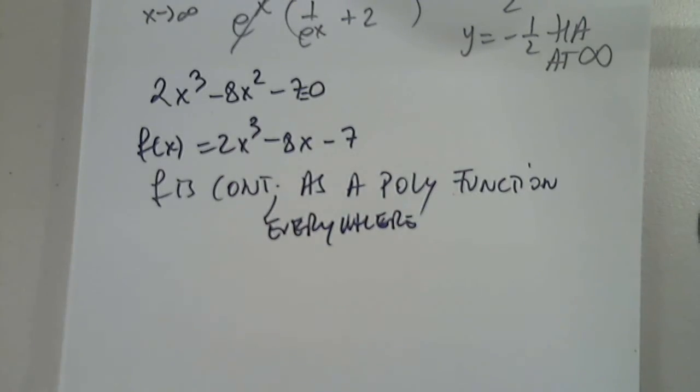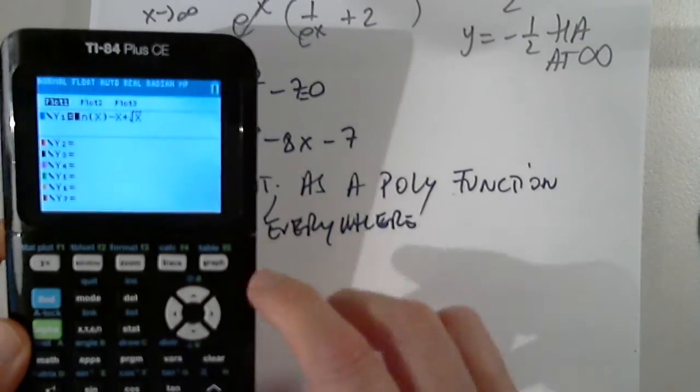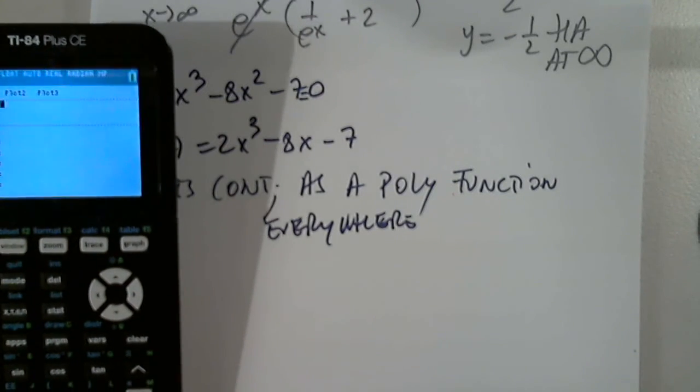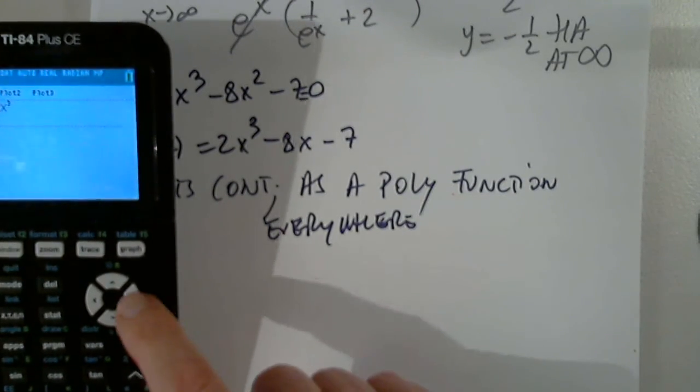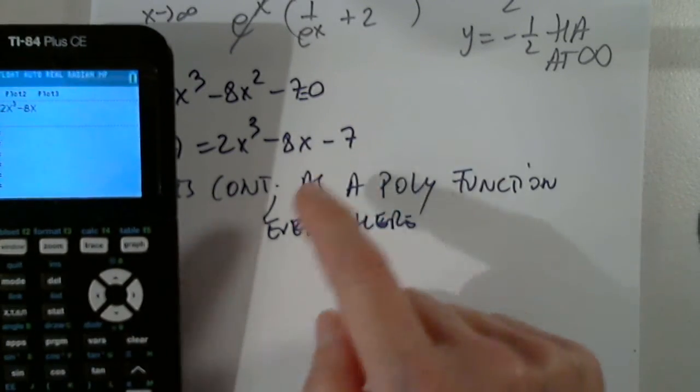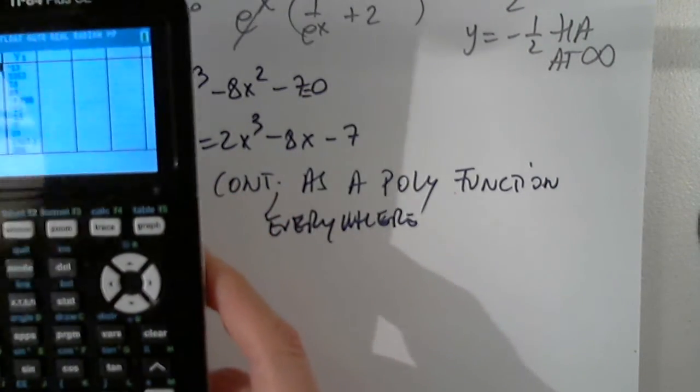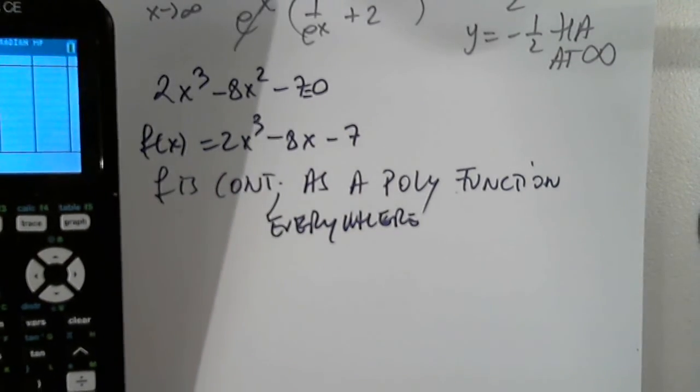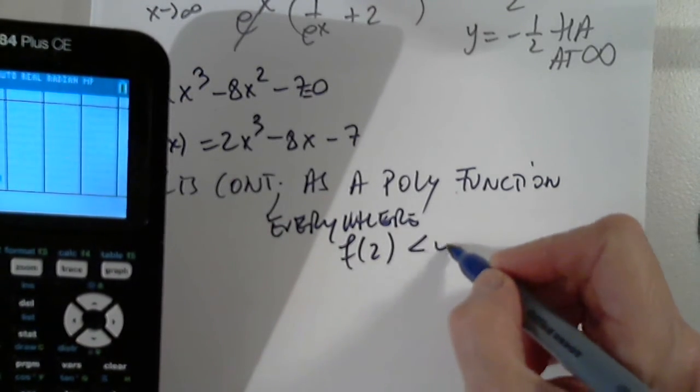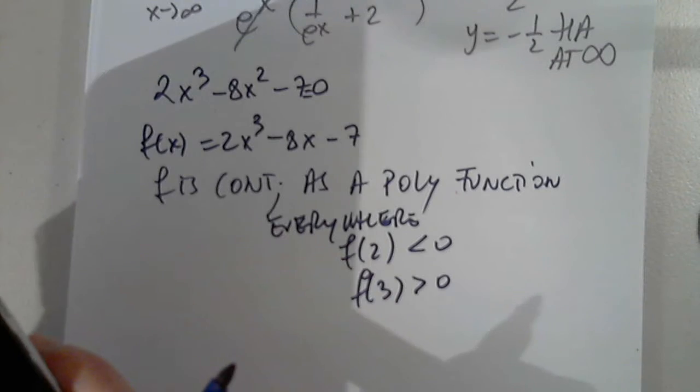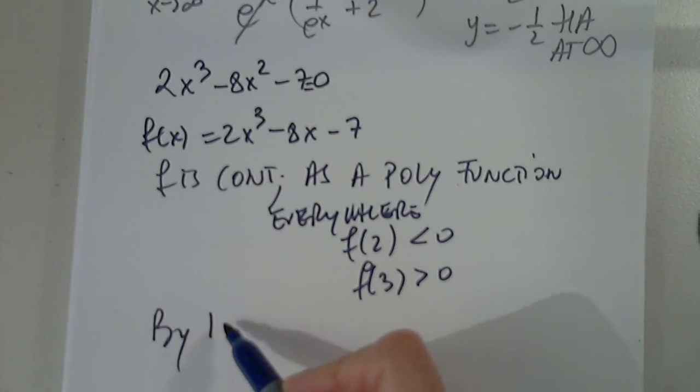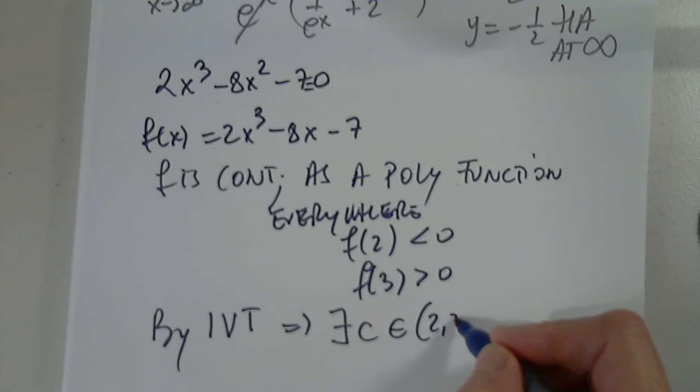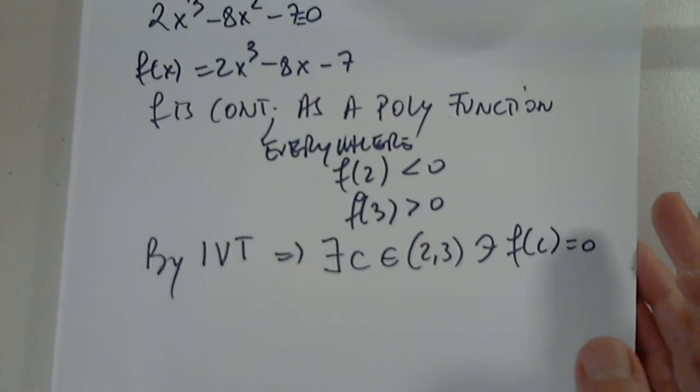I put the function in the graph and calculator and I punch in numbers. So in y equals, I clear and I put 2x cubed minus 8x minus 7. And I found an interval between F of 2 is negative, F of 3 is positive. And then I would write by intermediate value theorem, it implies that there exists a C in the open interval 2, 3 such that F of C is 0. We don't know what C is.